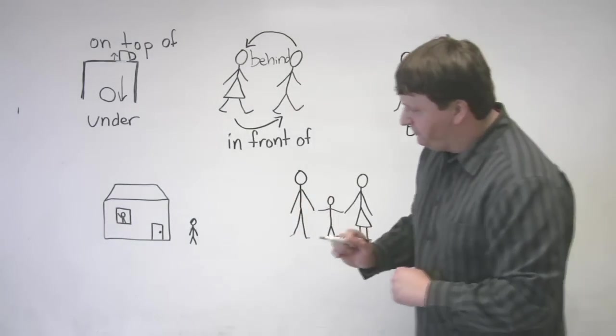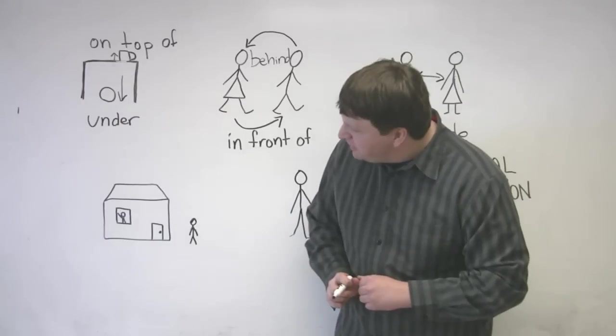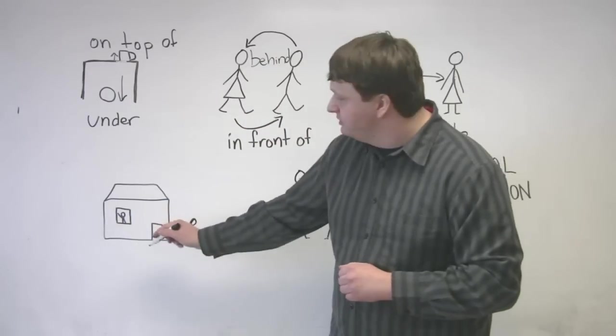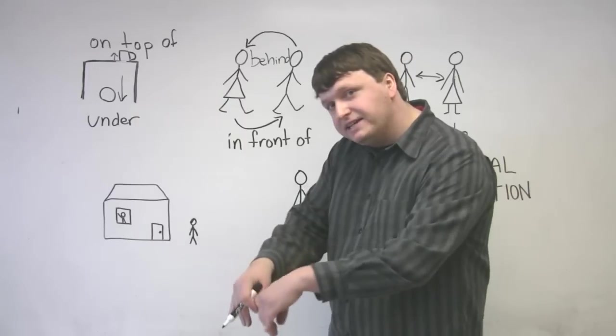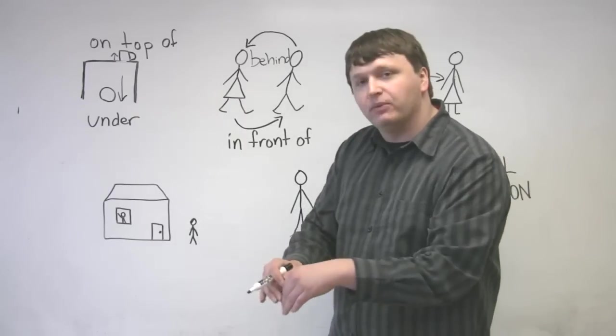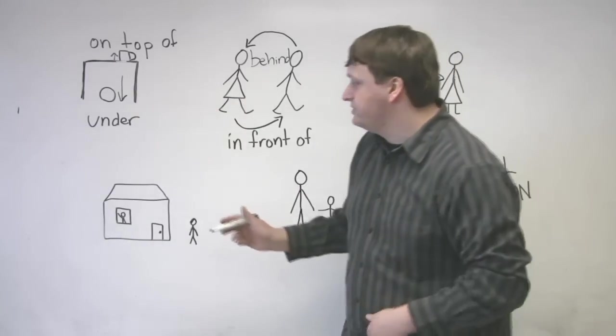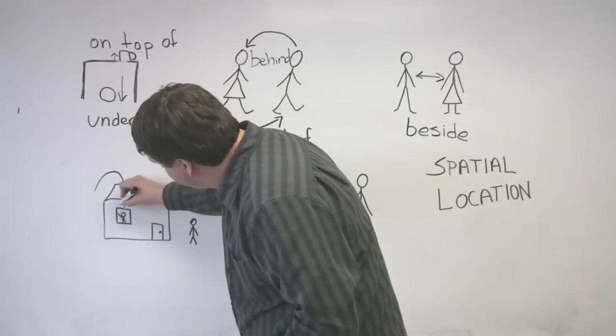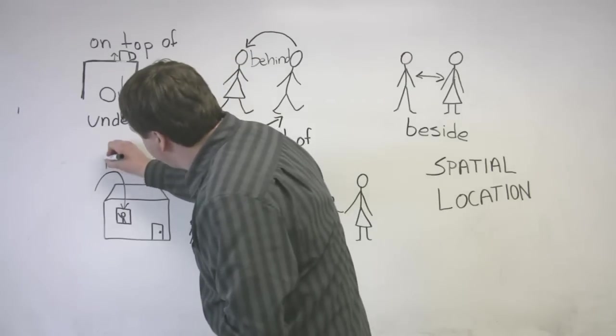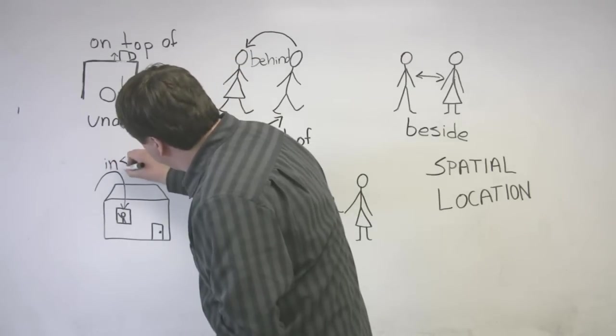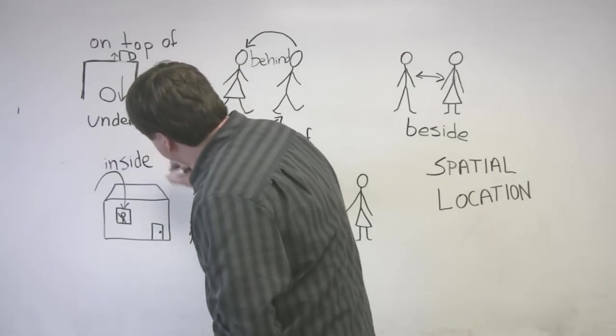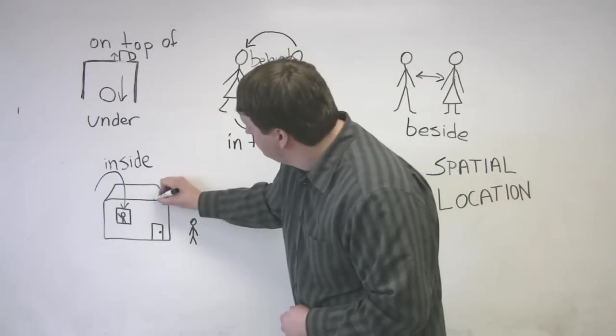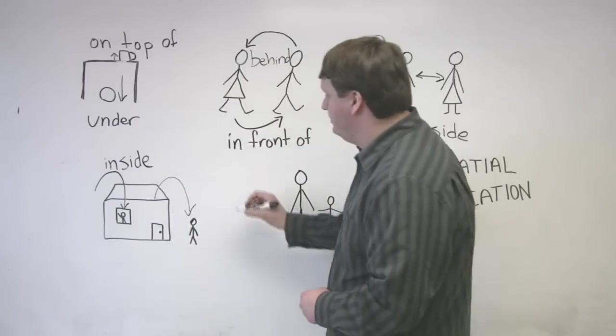And this one here. We have a picture of a house. By the looks of it, not a very expensive house. However, we have two people. We have someone inside the house. And we have someone outside the house. So this person is inside the house. Inside. And in relation to the house, this person is outside the house.